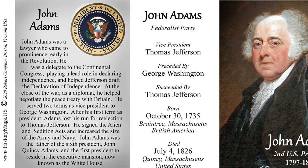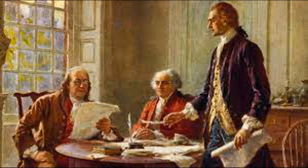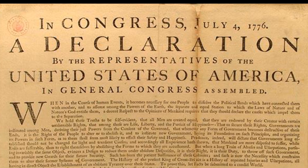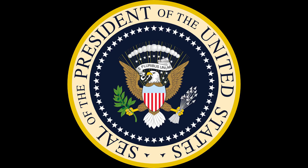Adams's prediction was off by two days. From the outset, Americans celebrated independence on July 4th, the date shown on the much-publicized Declaration of Independence, rather than on July 2nd, the date the resolution of independence was approved in a closed session of Congress. Historians have long disputed whether members of Congress signed the Declaration of Independence on July 4th, even though Thomas Jefferson, John Adams, and Benjamin Franklin all later wrote that they had signed it on that day. Most historians have concluded that the Declaration was signed nearly a month after its adoption, on August 2nd, 1776, and not on July 4th as is commonly believed.